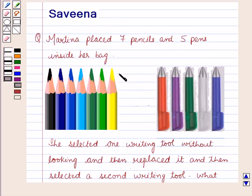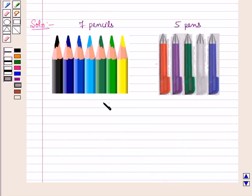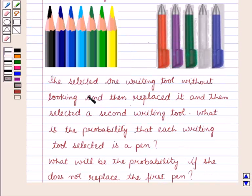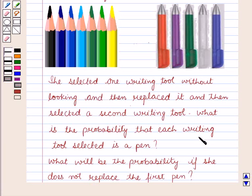Now let us start with the solution of the given question. In the question it is given that Martina has 7 pencils and 5 pens inside her bag, which means in total she has 7 plus 5 equal to 12 writing tools. It is also given that she selected one writing tool without looking and then replaced it and then selected a second writing tool. We have to find what is the probability that each writing tool selected is a pen.